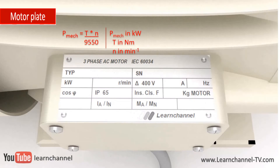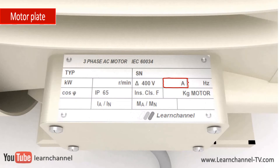The motor rated current is the amount of amperage in the power lines the motor needs when it is operated at full-load torque and mechanical output power. The motor operates with best efficiency when driven at the rated frequency for which it is designed. Europe and India have 50 Hz; America and Asia usually have 60 Hz.